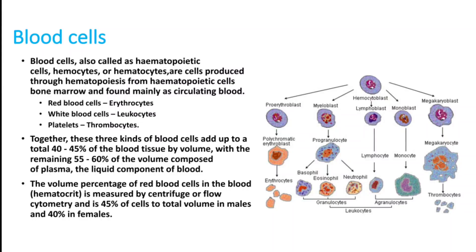Blood cells are otherwise called as hematopoietic cells. There are different types of blood cells: red blood cells, white blood cells, and platelets. Red blood cells are otherwise called as hemoglobin or RBCs — they carry oxygen from the lungs to various parts of the body. WBCs or white blood cells try to prevent infection and help resist infection in our body. Platelets produce platelet plugs and prevent bleeding.